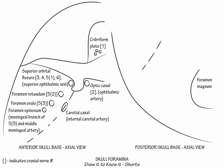First, along the petrous apex, draw the internal acoustic meatus. Indicate that both cranial nerve 7 and 8 and the internal auditory artery pass through it.